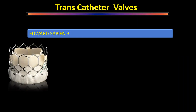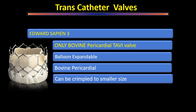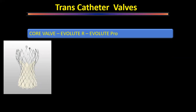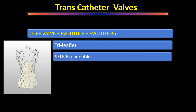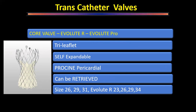The two most commonly used TAVI valves: Edwards Sapien — the only bovine pericardial transcatheter valve, balloon-expandable, can be crimped to smaller sizes for easier delivery through smaller access. Available in 23, 26, and 29 mm sizes. The CoreValve / Evolut R / Evolut Pro — tri-leaflet, self-expandable, porcine pericardial valves. These can be retrieved and repositioned if seal is inadequate or paravalvular leak is unacceptable. Available in larger sizes up to 34 mm, whereas 29 mm was previously the largest available.